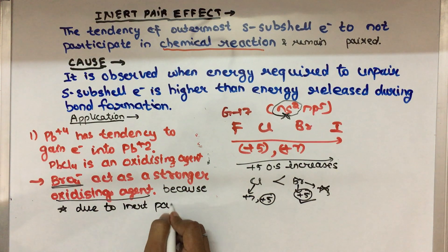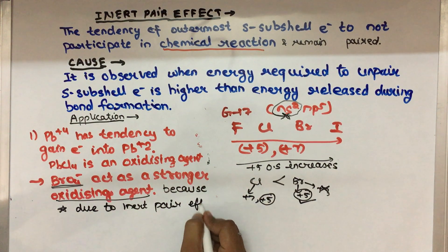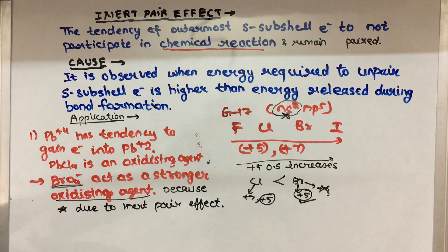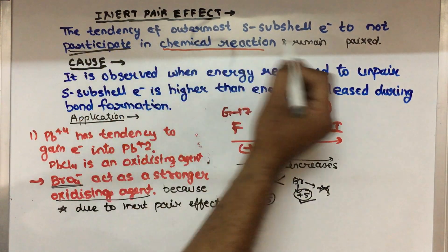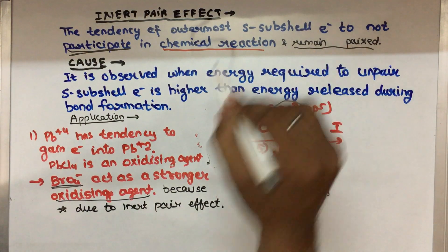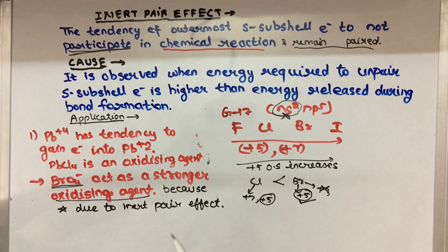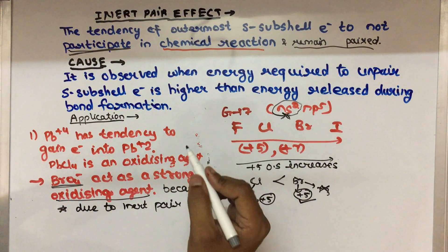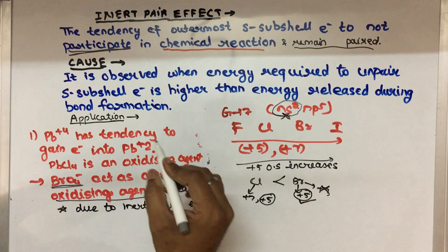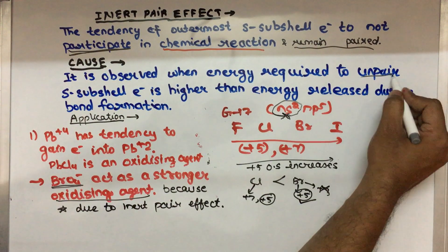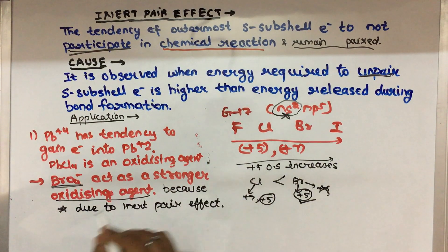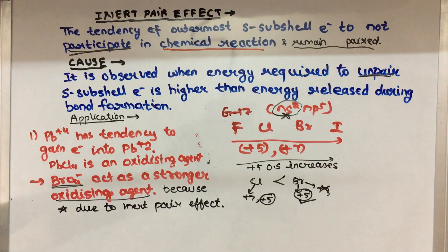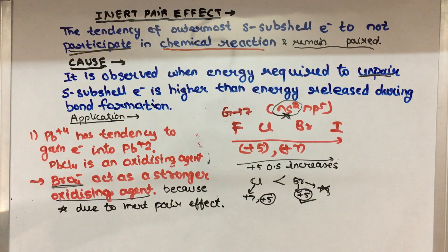So, to summarize: the Inert Pair Effect is the tendency of outermost s sub-shell electrons to not participate in a chemical reaction and remain paired. They remain paired because bond formation involves the p sub-shell, and there is not enough energy to unpair the s sub-shell electrons for bond formation. This concludes all applications of the Inert Pair Effect. Thank you.